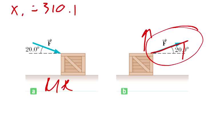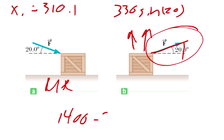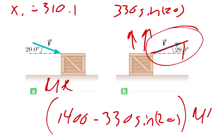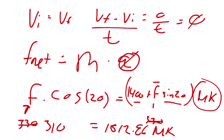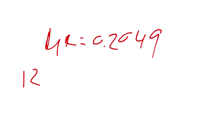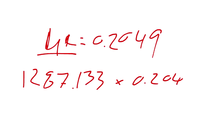So we would say 330 times the sine, opposite over hypotenuse, 330 times the sine of 20, is being taken away from the weight. So 330 sine of 20 is being subtracted from, instead of being added to the 1400, it's being subtracted from the 1400 before it gets multiplied by our coefficient. And so what we get here from this term is 1287.133. So 1287.133 times MK times 0.205.